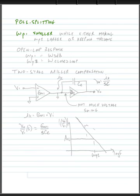Our first pole or our dominant pole frequency, while either making omega p2 larger—omega p2 equals the frequency of our higher order pole frequency—or keeping it the same.